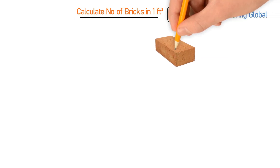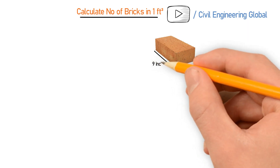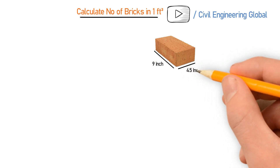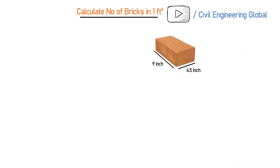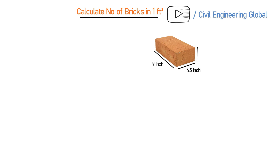So let's take a standard brick. As we all know, the size of the standard brick: the length of the brick is 9 inches, the breadth is 4.5 inches, and the height of the brick is 3 inches.